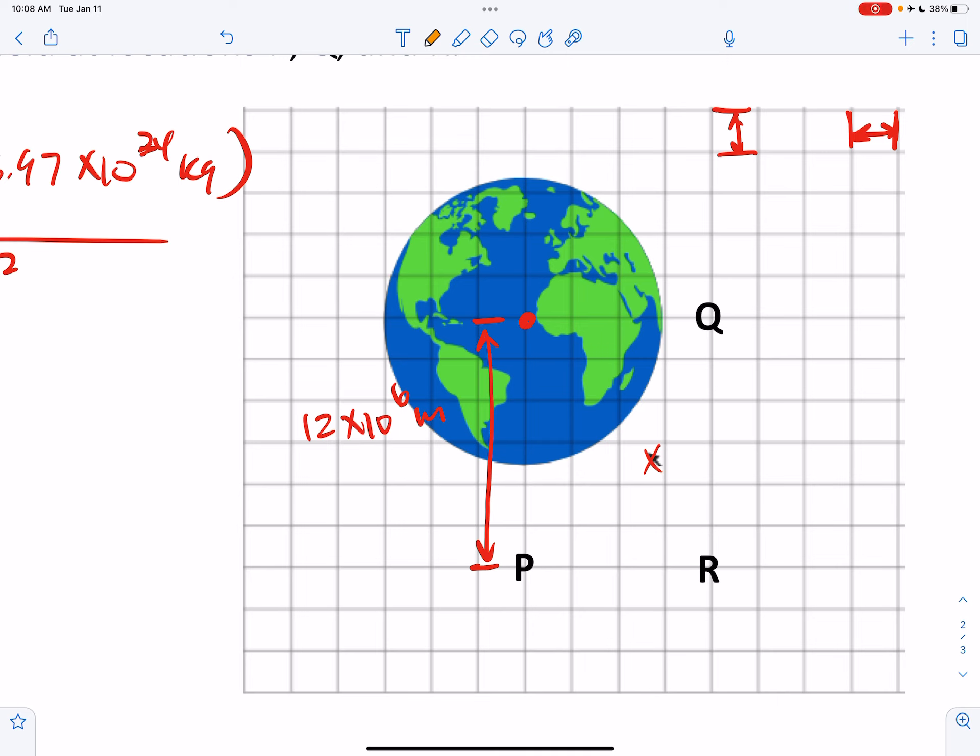So from Q to the center, so now we're looking like from here to here. So that's 1, 2, 3, 4 squares. Each square is 2 million meters. So that would be 8 million, which is 8 times 10 to the 6th meters.